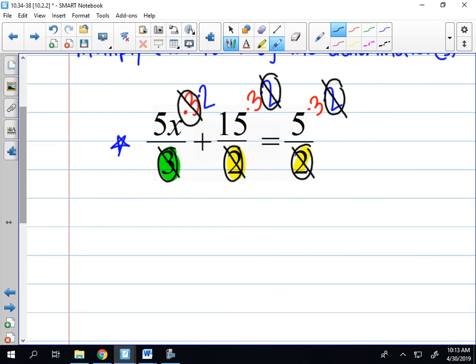Now let's look at what's left over: 5x times 2 is 10x, plus 15 times 3 which is 45, equals 5 times 3 which is 15. And now I have an equation that has no fractions in it, and for most students it's going to be pretty easy to solve.